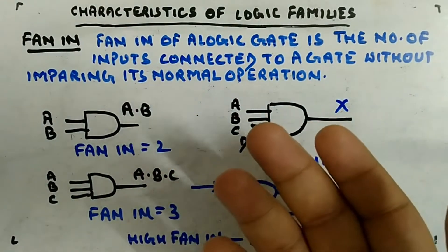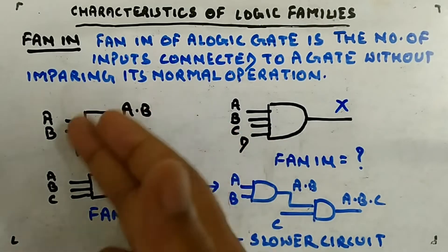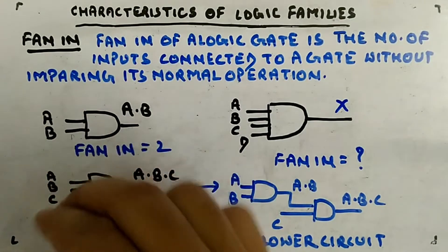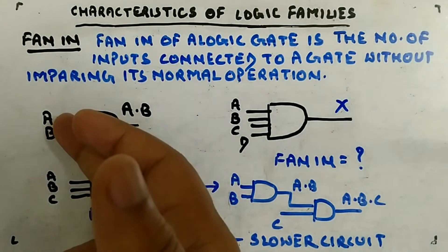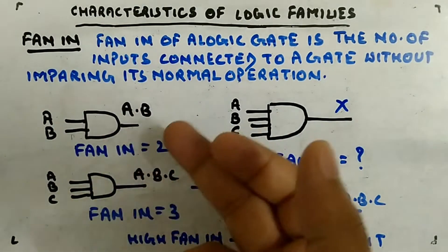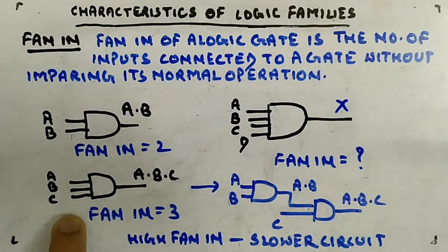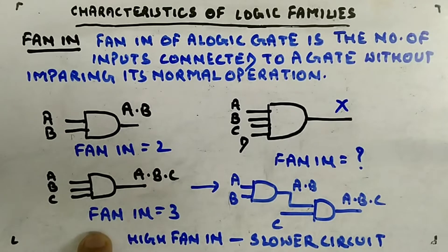Here's an example with an AND gate. If you apply two inputs and it gives output according to its function — AND between the inputs — and it successfully produces the required output, then the fan-in is two. If you take three inputs A, B, C to the AND gate and it successfully produces A·B·C, then the fan-in is three.